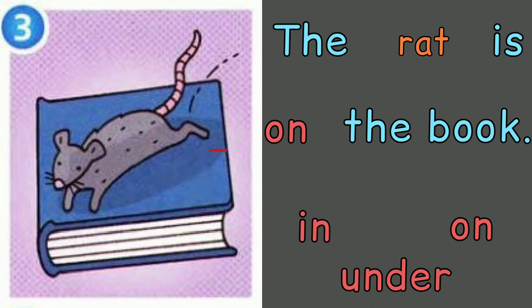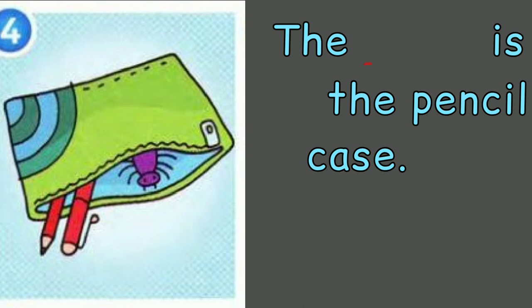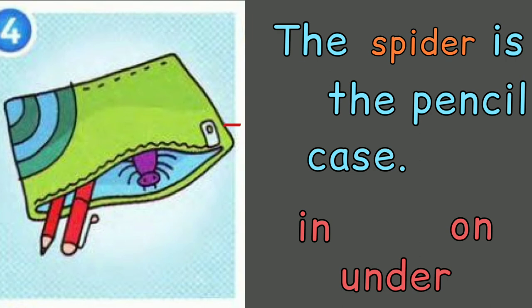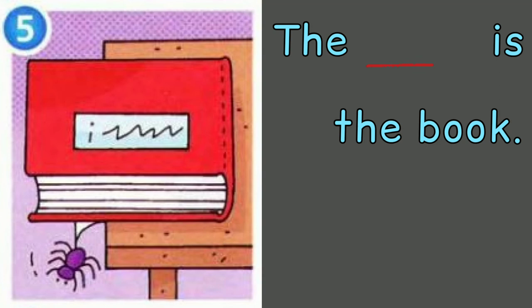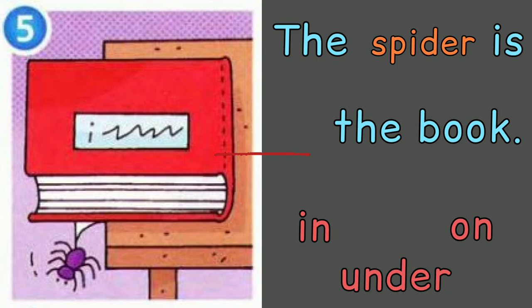Number four. What animal is in the picture? It's a spider. Where is the spider? Is it on the pencil case, in the pencil case, or under the pencil case? The spider is in the pencil case. Five. What animal is in this picture? It's another spider. Where is this spider? Is it on the book, in the book, or under the book? The spider is under the book.